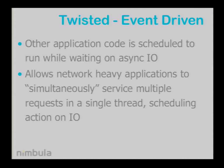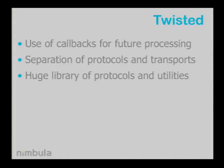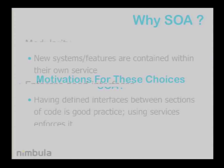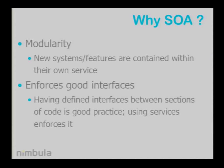It looks like you're simultaneously serving multiple requests because you're blocking on I/O. Twisted uses callbacks for future processing, it separates protocols and the underlying transports very nicely — so you can have HTTP over a file — and it's got a huge library of protocols and utilities. The reason we chose these three things when building a large system distributed across many machines is: with service-oriented architecture, we're looking for modularity, and new systems or new features we put into the larger system are contained within their own service, so we don't have to disrupt existing code.